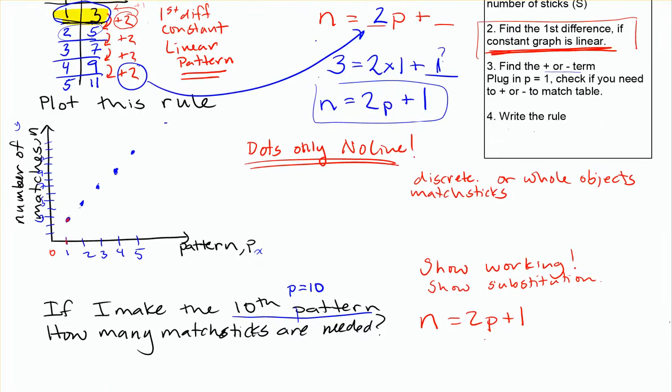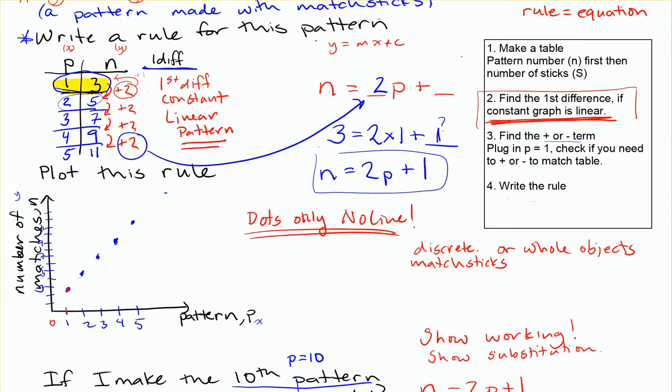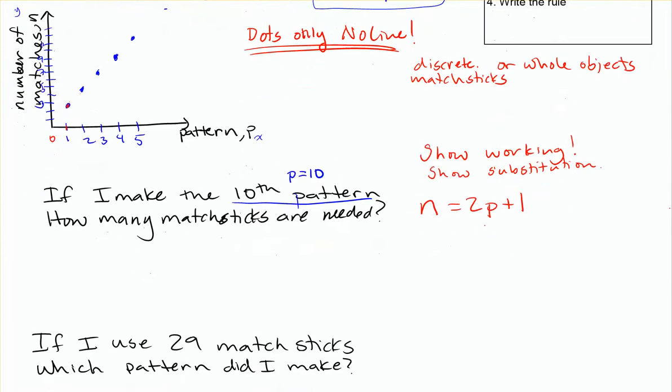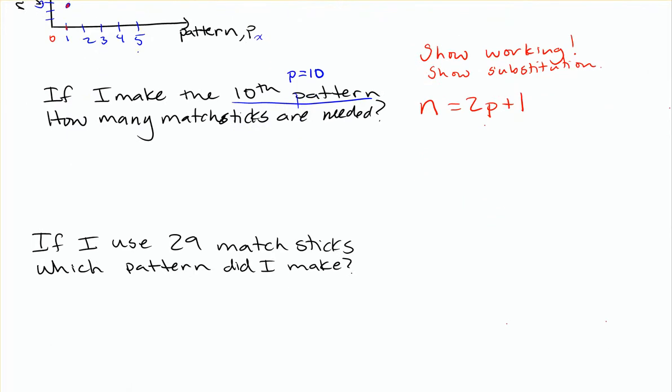Again, if you go back up to what we were talking about originally, p stands for the pattern and n stands for the number of matchsticks. So for the tenth pattern, p is equal to 10. How many matchsticks do I need? That means they're looking for me to find n. n is equal to how much?